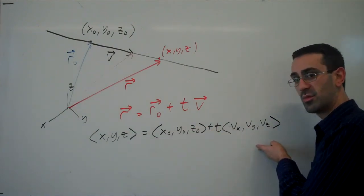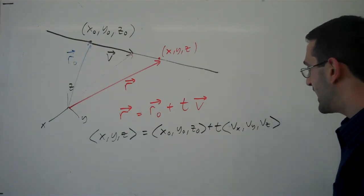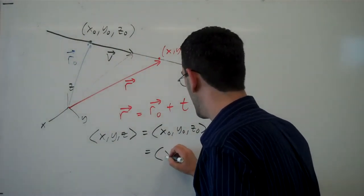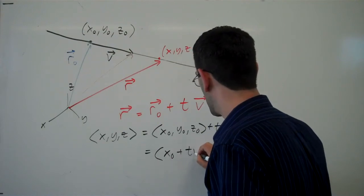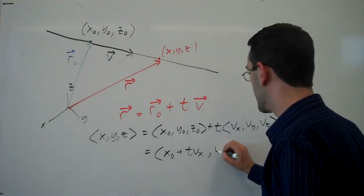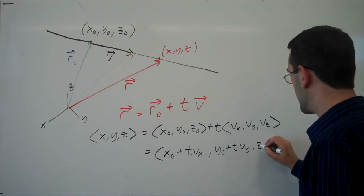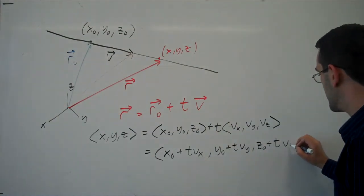Then here's a more written out vector form. And then we could scale this vector and combine the components here to say this is x naught plus t v sub x, y naught plus t v sub y, and z naught plus t v sub z.